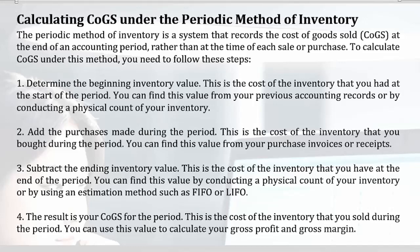To calculate COGS under this method, you need to follow these steps. Step one: determine the beginning inventory value — this is the cost of the inventory that you had at the start of the period. You can find this value from your previous accounting records or by conducting a physical count. Step two: add the purchases made during the period — this is the cost of the inventory that you bought during the period, found from your purchase invoices or receipts.